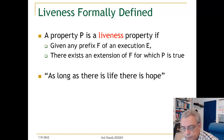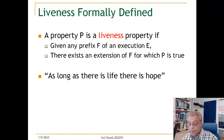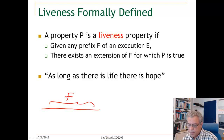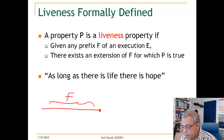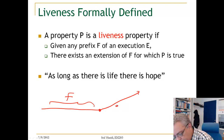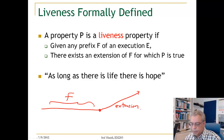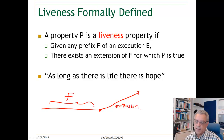Now let us look at liveness. A property P is a liveness property if, given any prefix F of an execution, there is always an extension of that prefix for which P is true. So a liveness property is one where we can always make it true — as long as there is life, there is hope.